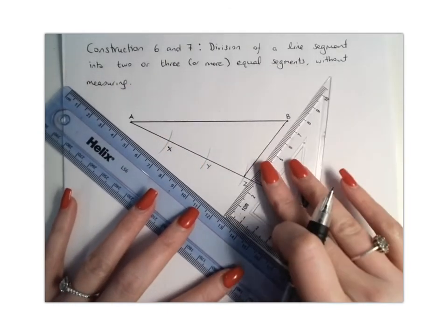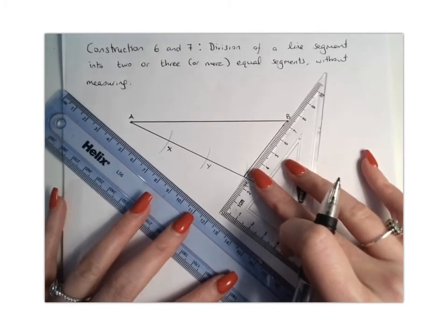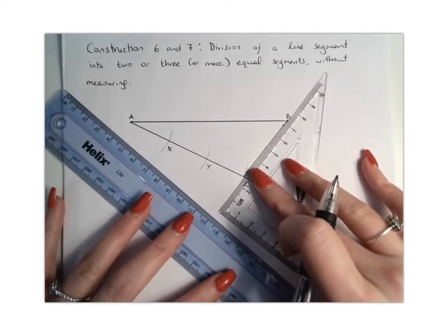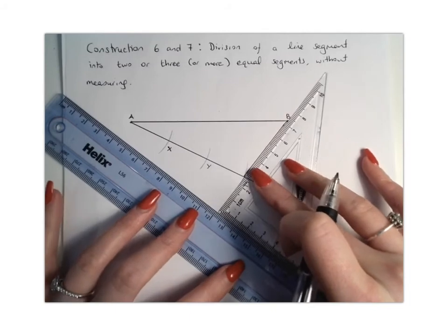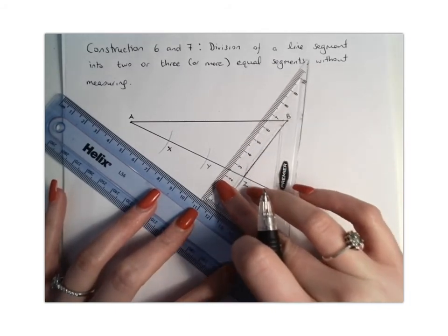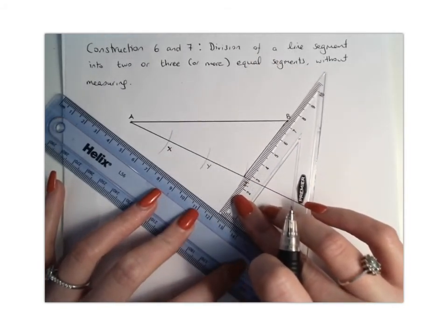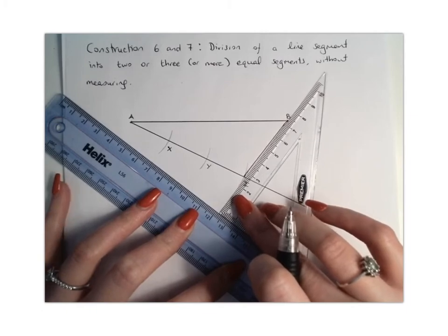So we're going to set up our set square where our set square is in line with our line, I should say. And you're going to fix your ruler underneath. And this is called sliding set square. So if I slide my set square along here, all these lines are parallel to the line BZ. And that's exactly what we want.